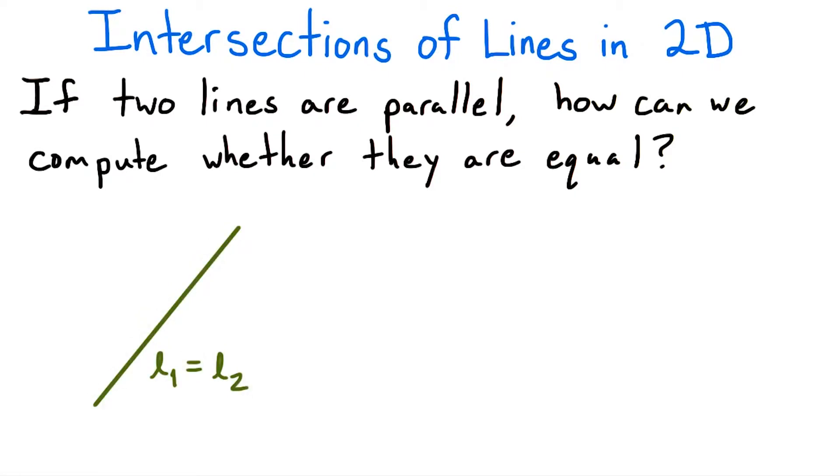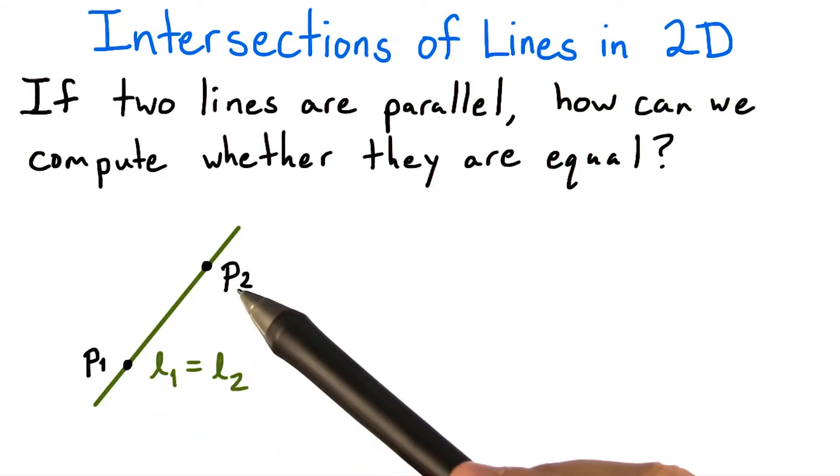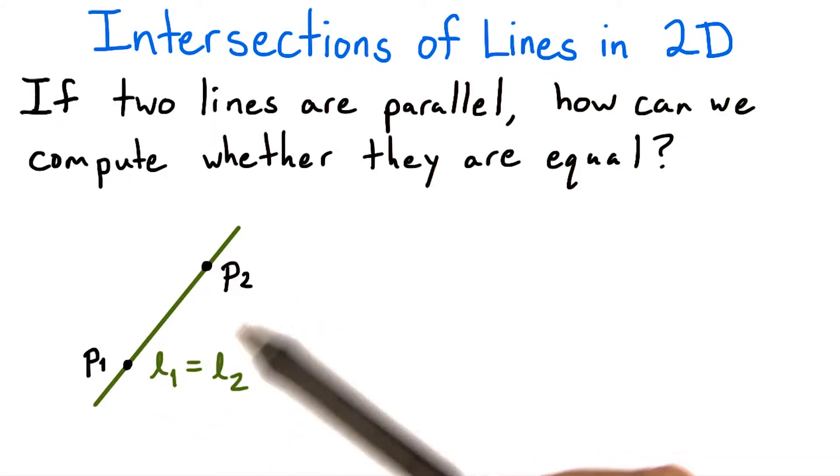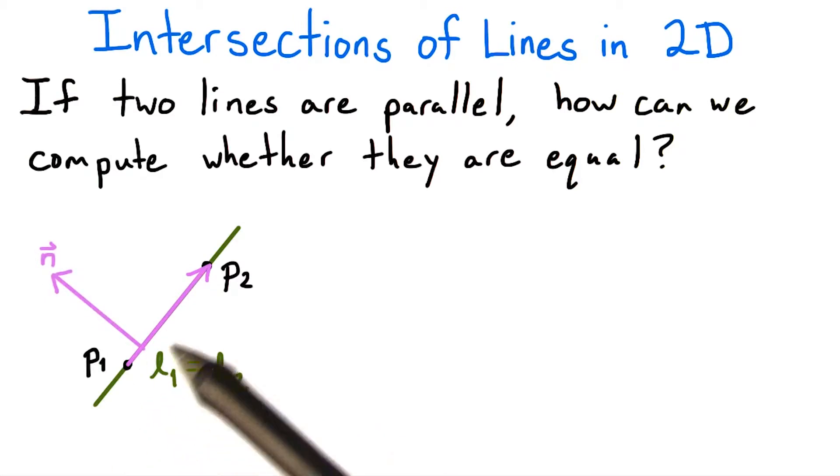Suppose the two lines are coincident, that is the same line. Then, if I take any point from the first line and any point from the second line, in reality from the same line, then the vector connecting the two points will be parallel to both lines. In other words, this vector will be orthogonal to both lines' normal vectors.